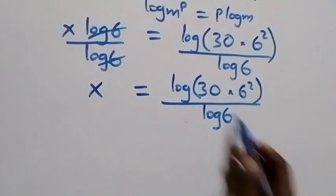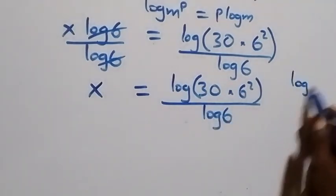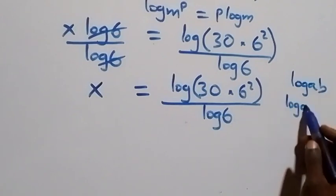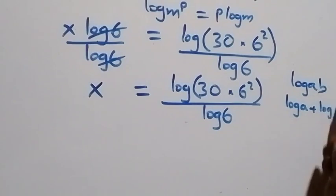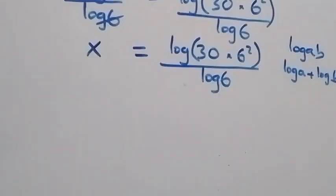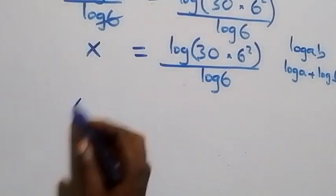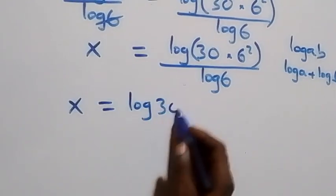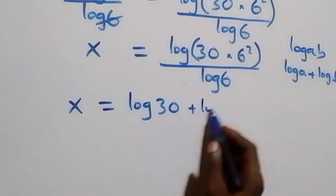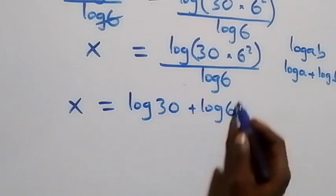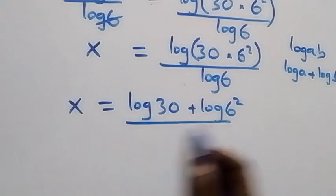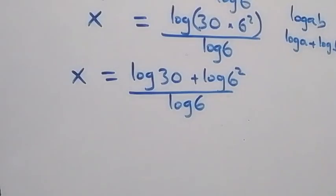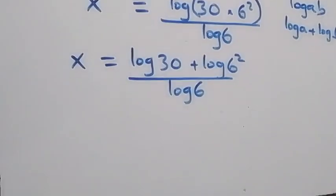This follows the product law of logarithm: log of a times b is the same as log a plus log b. So we have x equals log 30 plus log 6 squared, then over log 6.